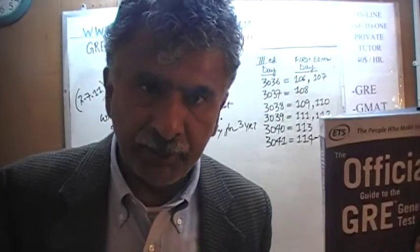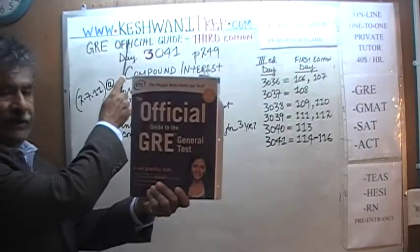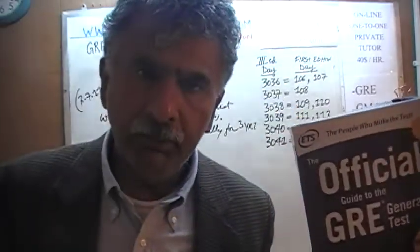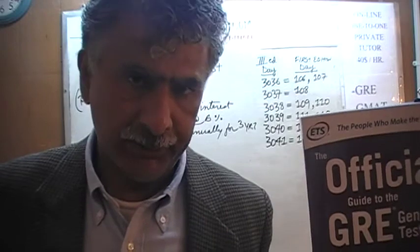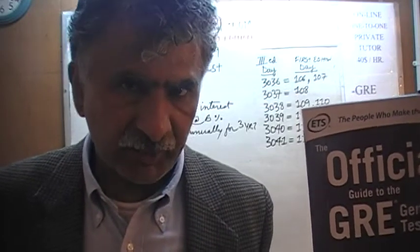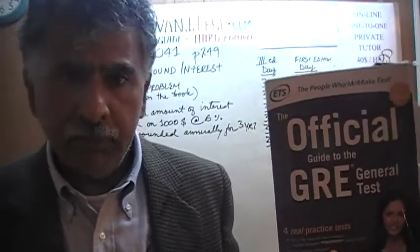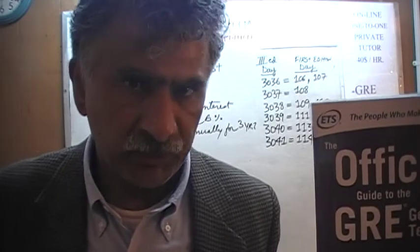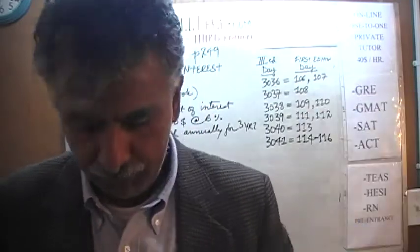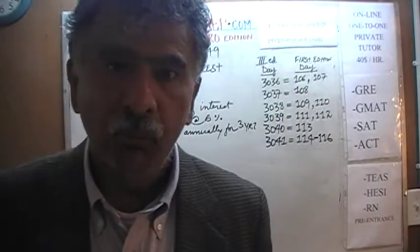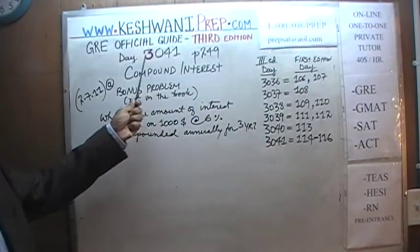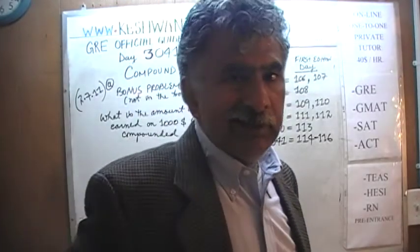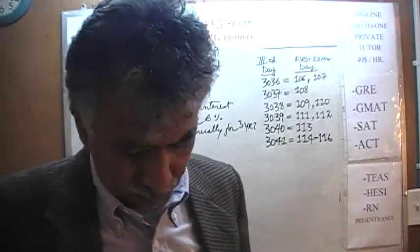Hello, my name is Keshwani — that's K-E-S-H-W-A-N-I. We are here because we want to prepare for the GRE. We have been solving GRE math problems out of this book, the Official Guide to the GRE, third edition. If you do not own this book already, purchase it immediately. Today is our lesson number 41, day 41 of the third edition. We are on page 249 and the topic we will discuss today is compound interest.